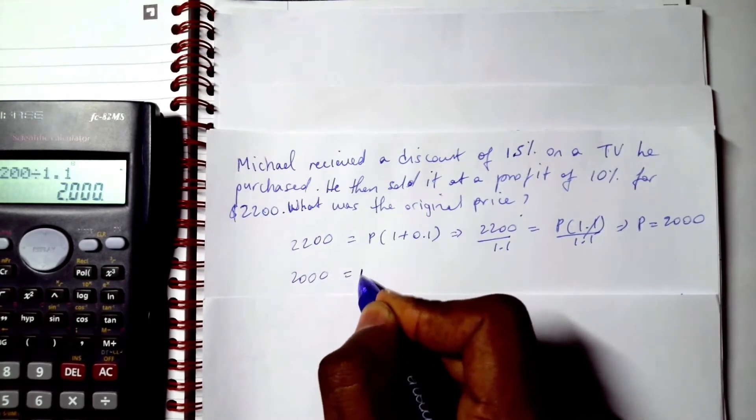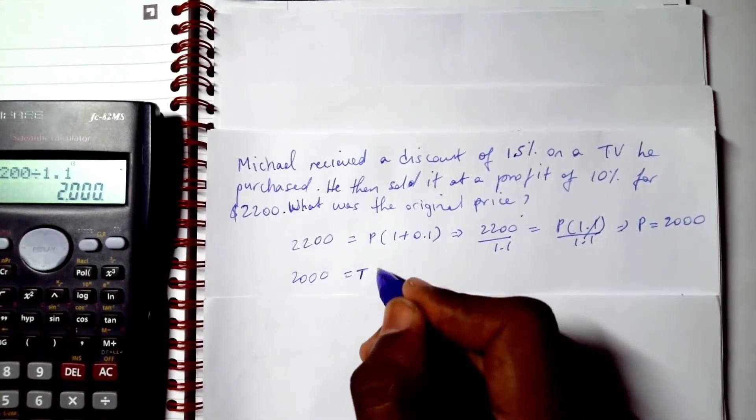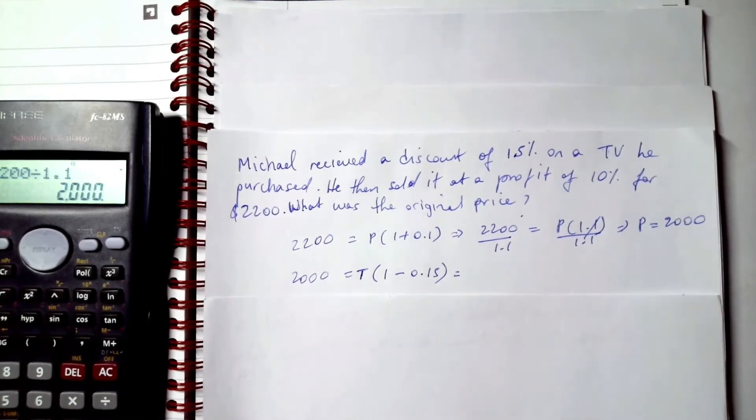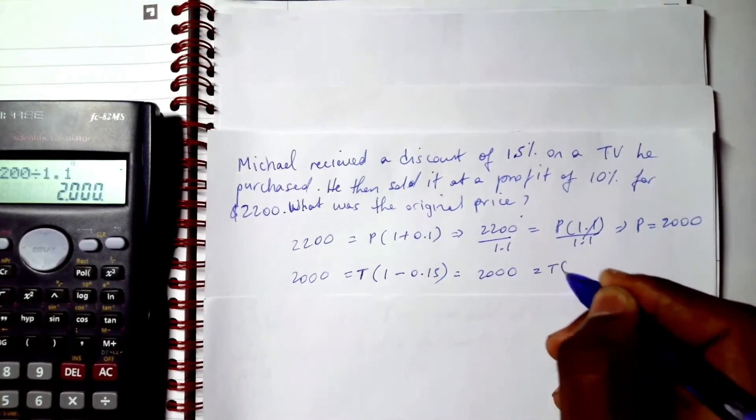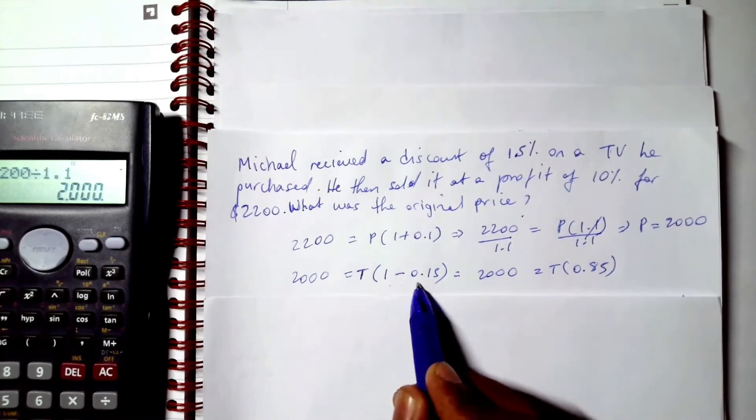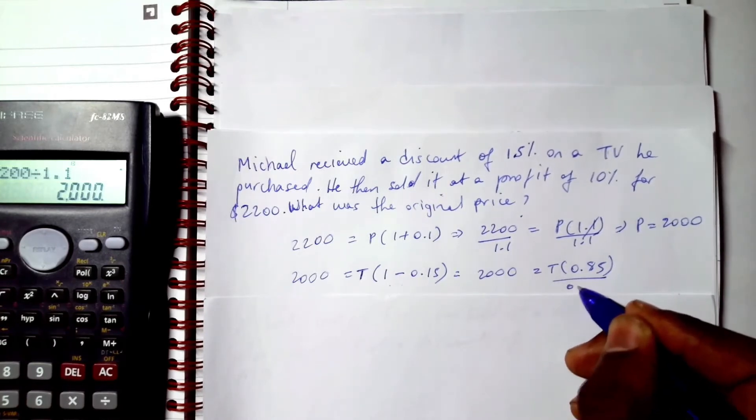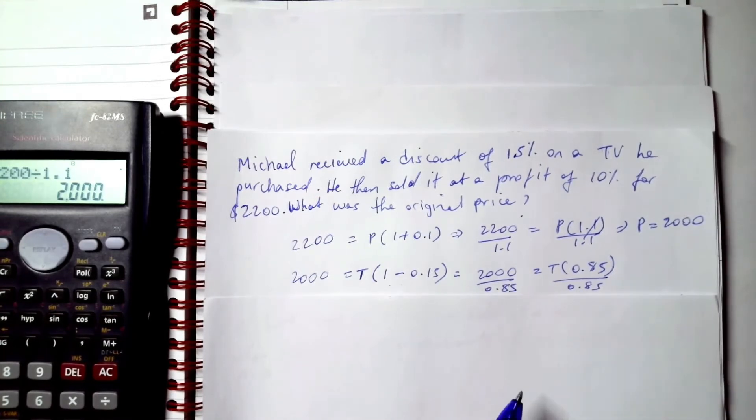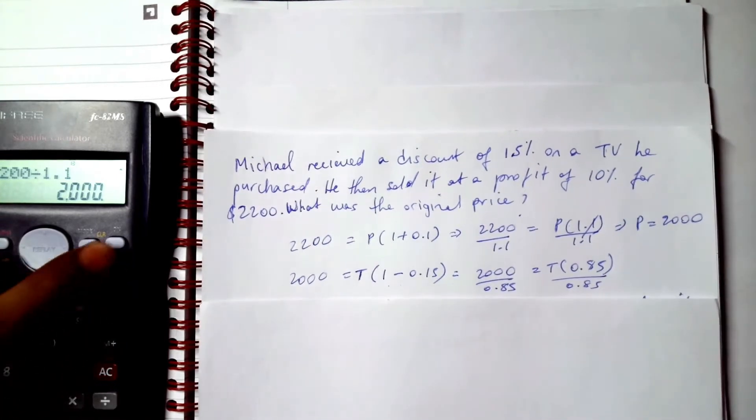We know that $2000 must be equal to some value, let's call it T. After a discount of 0.15 was applied, 2000 = T × 0.85, because 1 minus 0.15 is equal to 0.85. Divide both sides by 0.85.